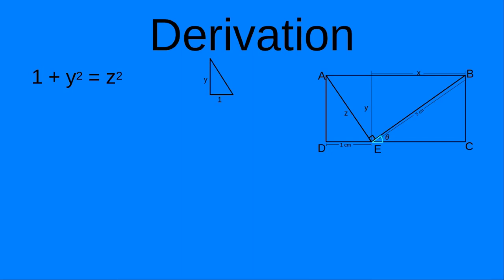A second equation comes from the central triangle. The two legs are Z and five, so Z squared plus 25 equals the whole hypotenuse length squared — which is one plus X, that whole quantity squared. So now we have something to work with: two equations and three unknowns so far.